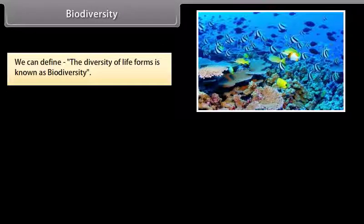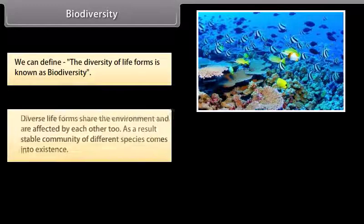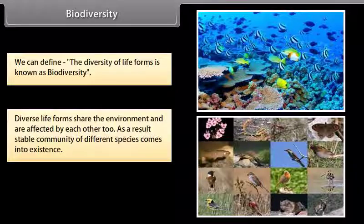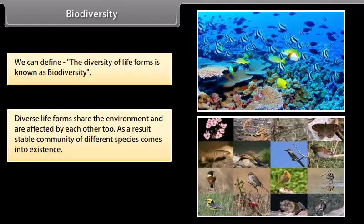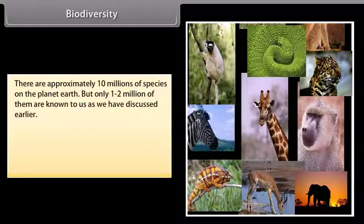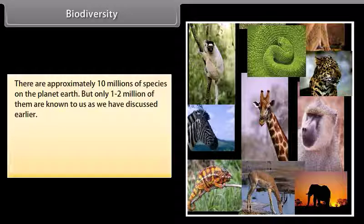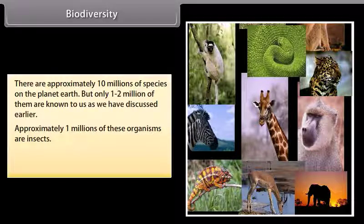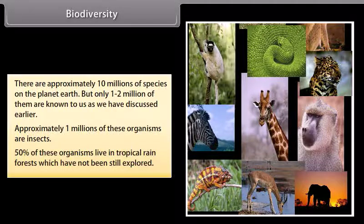Biodiversity: the diversity of life forms is known as biodiversity. Diverse life forms share the environment and are affected by each other, and as a result a stable community of different species comes into existence. There are approximately 10 million species on planet earth, but only 1 to 2 million of them are known to us. Approximately 1 million of these organisms are insects, and 50% of these organisms live in tropical rainforests which have not been fully explored.